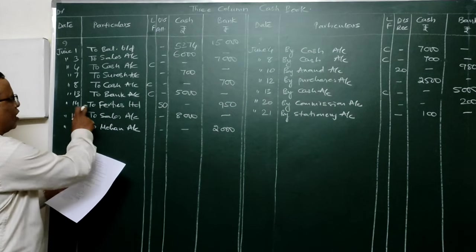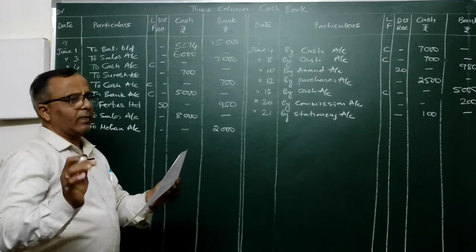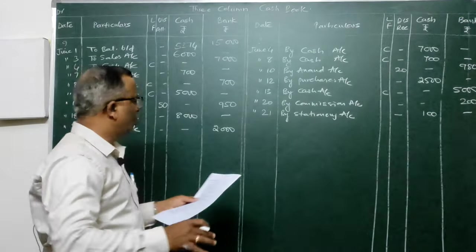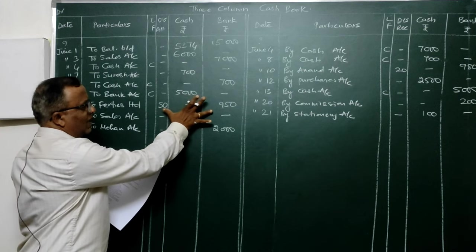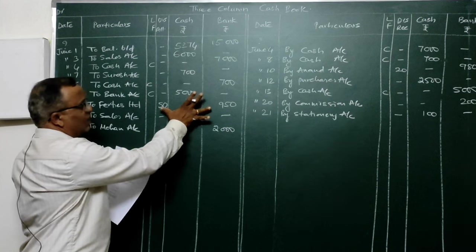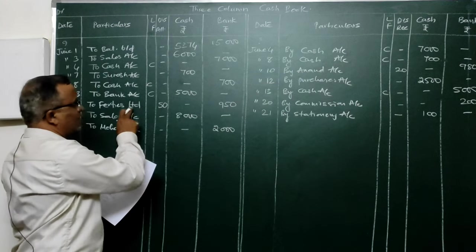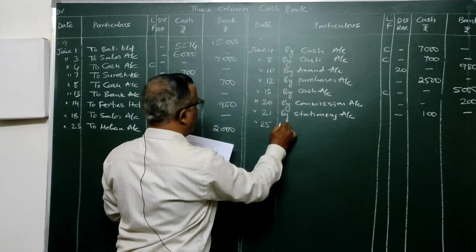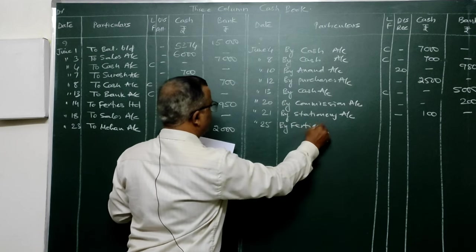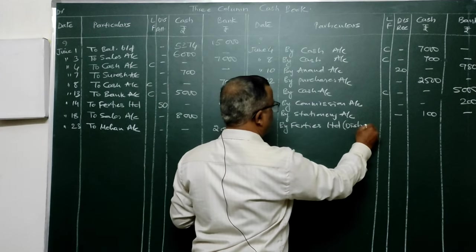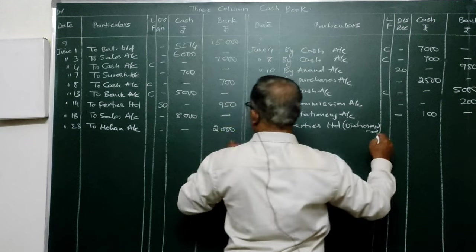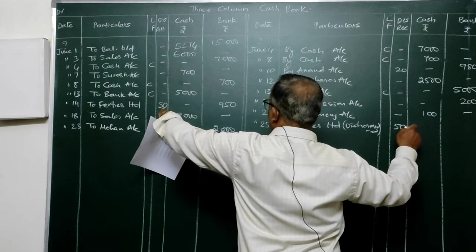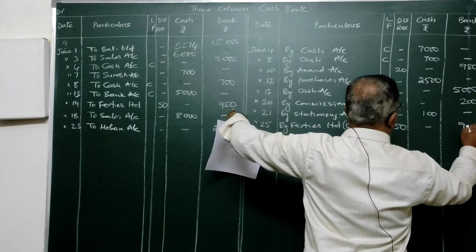To cancel the dishonored check: whatever was posted on the debit side is now posted on the credit side. Write 'By 40s Limited' on the 25th on the credit side. Discount 50 is written in the discount column to cancel the earlier entry, and 950 in the bank column — this is how a dishonored check is posted.